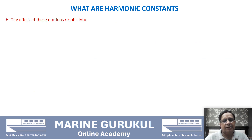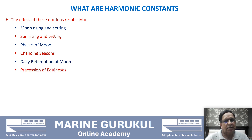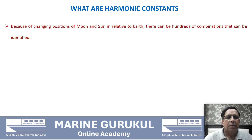The effect of these motions results in moonrise, moonset, sunrise, sunset, phases of the moon, changing seasons, daily retardation of the moon, precession of the equinoxes, and drifting of the moon's nodes — all phenomena familiar from navigation. These occurrences are repetitive and cyclic in nature, so the resultant gravitational pull exerted by the moon and sun on the Earth also varies, producing a cyclic effect on the tides.